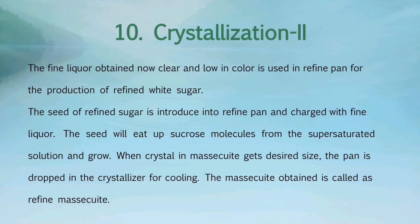Again, the process of crystallization is triggered. The fine liquor, now clear and low in color, is used in the refined pan for the production of refined white sugar. The seed of refined sugar is introduced into the refined pan and charged with fine liquor. The seed will take up sucrose molecules from the supersaturated solution and grow. When the crystals in the massecuite reach the desired size, the pan is dropped into the crystallizer for cooling, and the massecuite obtained is called refined massecuite.